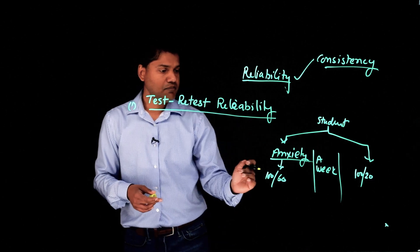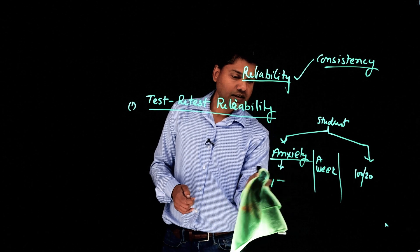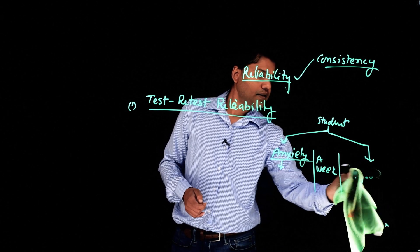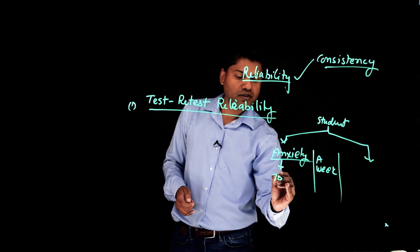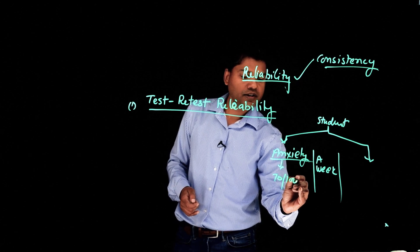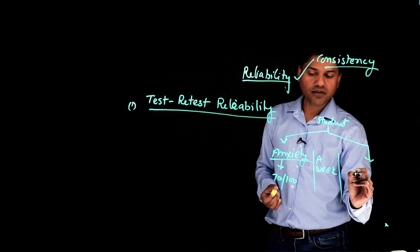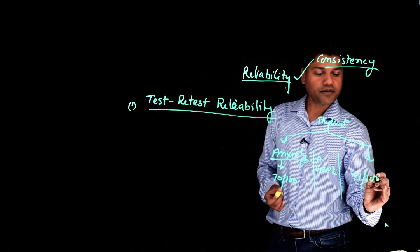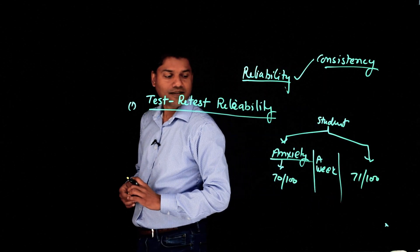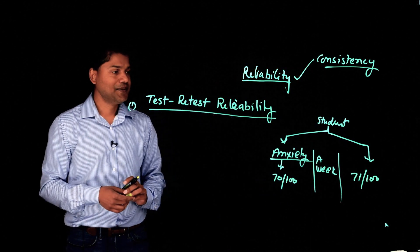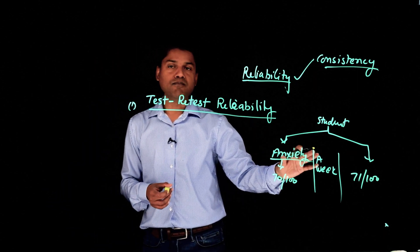Let's take the same example. Let's say a student, instead of scoring 60 on this scale, scored 70 out of 100. And then, a week later, same student scored 71 out of 100. Now, what do you think this time? It's pretty close, right? So we could say this test is more consistent.